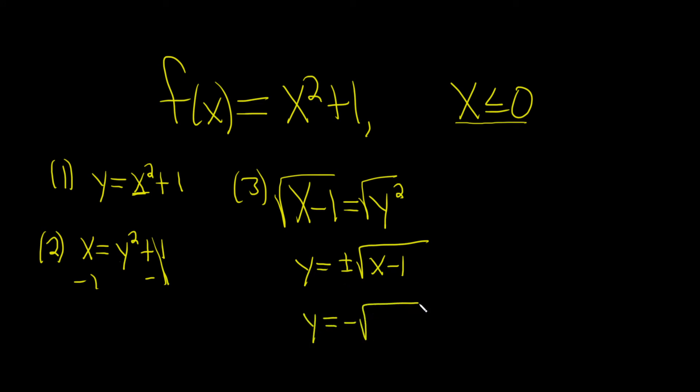So it's negative square root of x minus 1. Again, x is less than or equal to 0, but then it became the y. So we want y to be less than or equal to 0.